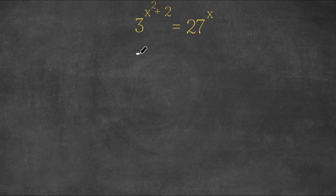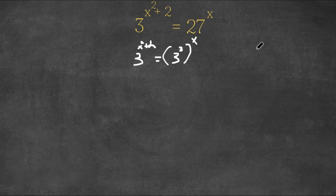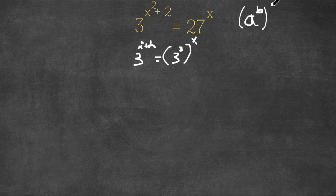So we're going to change this to 3 to the power of x squared plus 2 equals 3 to the power of 3 to the power of x. All we did was simply replace the 27 with 3 to the power of 3. Now remember an important property of exponents is that if you have a to the power of b to the power of c, this is equal to a to the power of b times c. So these two exponents multiply.